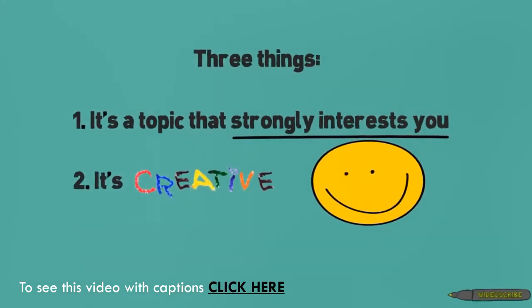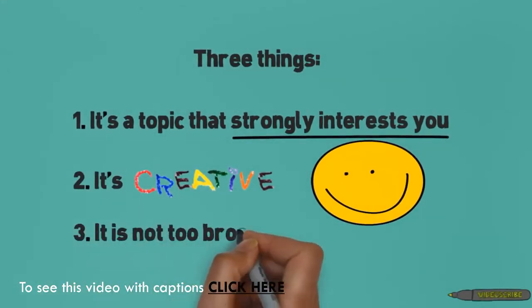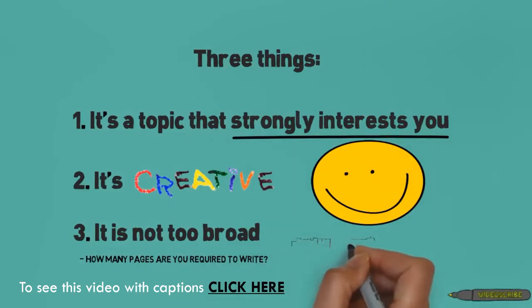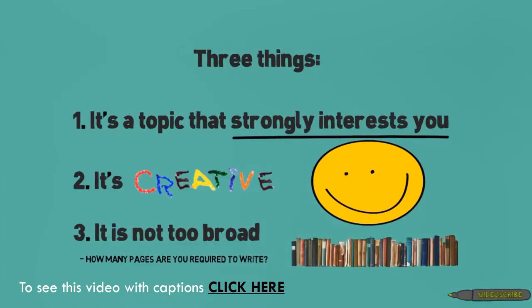And third, make sure you pick something that is not too broad. Look at your assignment prompt — how many pages are you supposed to write? If you get a five-page paper as an assignment, Shakespeare's dramas is going to be a little too broad. Make sure that the topic you choose fits the scope of your paper.